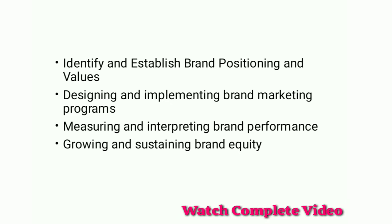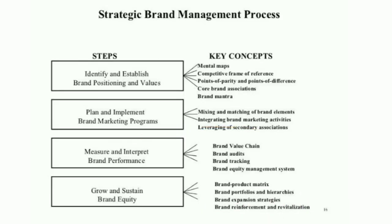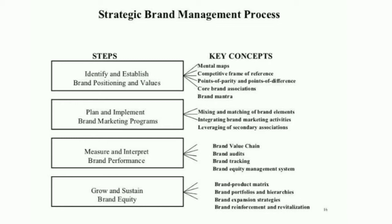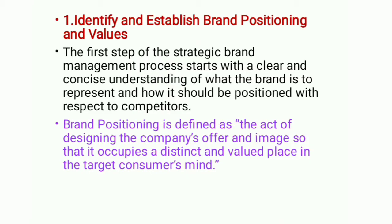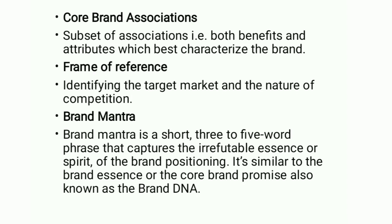There are four major steps in the strategic brand management process. A diagram is given here for your reference, covering all four steps in depth with sub-points. We have already discussed the first step — identifying and establishing brand positioning and values — which covered mental maps, points of difference, points of parity, core brand association, frame of reference, and brand mantra. Now let's move on to the second topic.